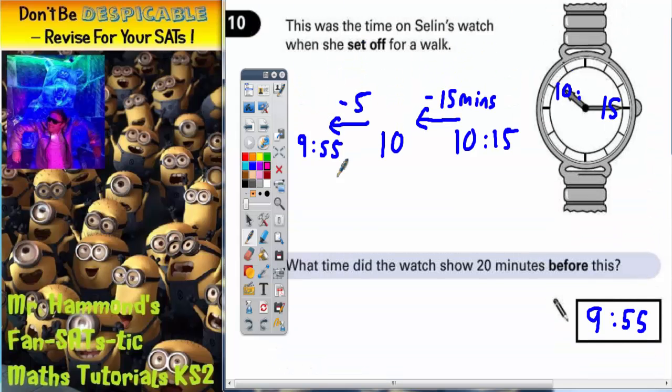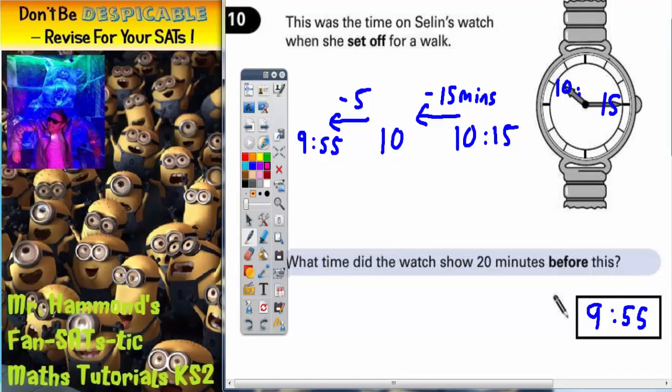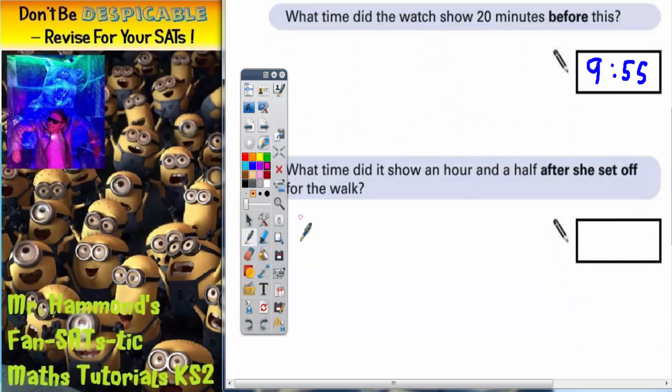So she still set off for the walk at 10:15, but now we want to do an hour and a half after. So we're trying to add 1 hour 30 minutes.